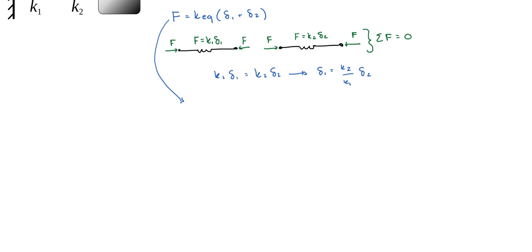So F can be thought of as K sub 2 delta 2 equal to equivalent stiffness times delta 1, which is K2 over K1 delta 2 plus delta 2.